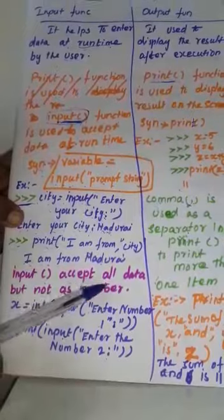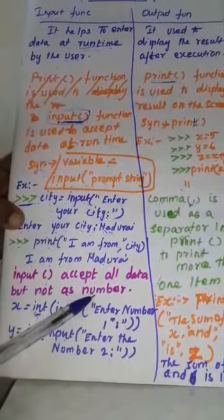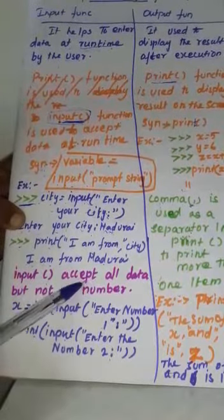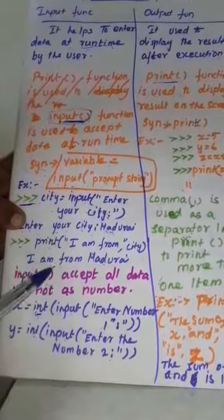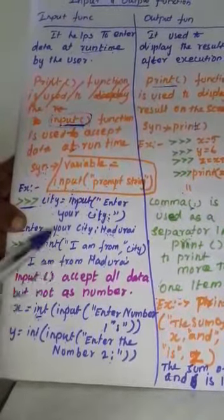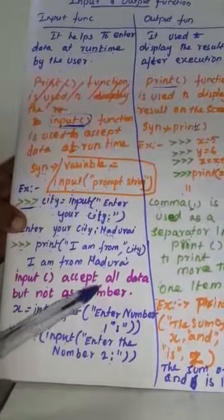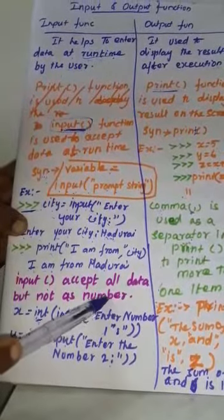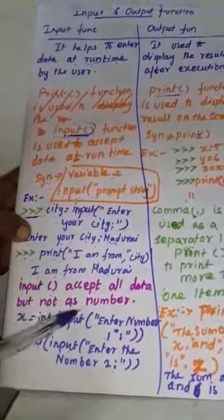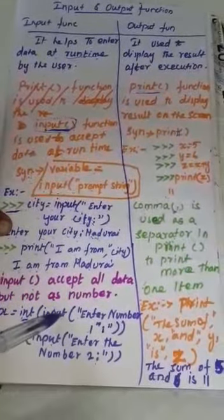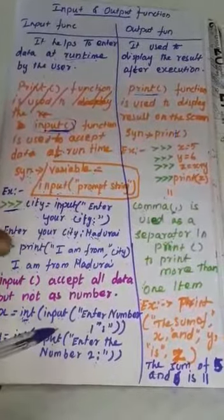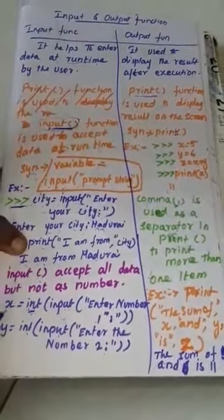Input function accepts all data, but not as number. Input function accepts all of the data means all data types: string, character, all data accepted, but does not accept only number data type. But if you want to type numeric values, how can you type? Here, see, let us see.